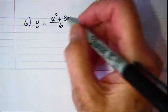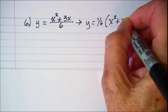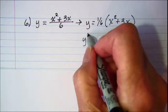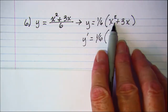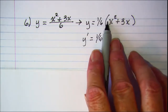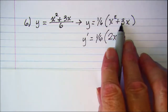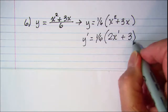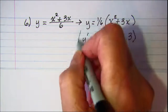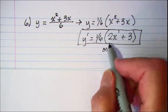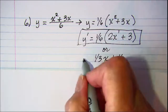On this one, rewrite as y = (1/6)(x² + 3x). The derivative uses the constant multiple rule: multiply (1/6) by the derivative of the function. Using the power rule on each term gives 2x to the first power for x², and 3x to the 0 which is just 3. Distributing: (1/6)(2) = 1/3, so we get (1/3)x, and (1/6)(3) = 1/2, giving a final derivative of (1/3)x + 1/2.